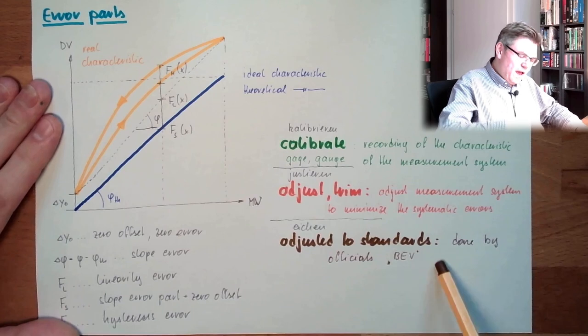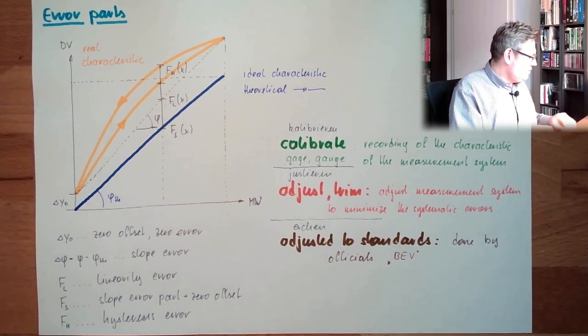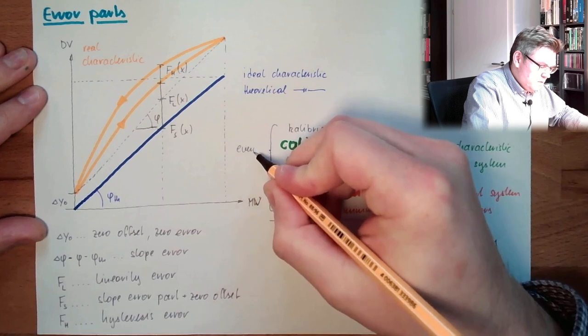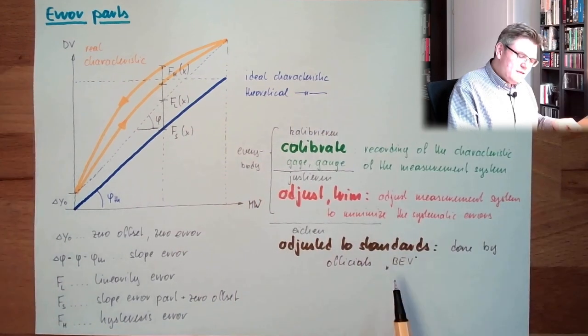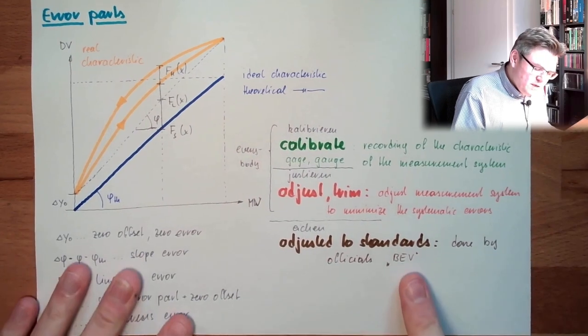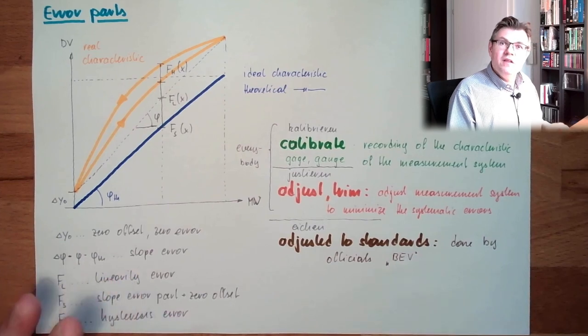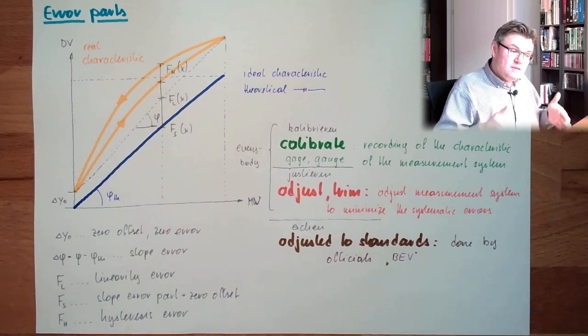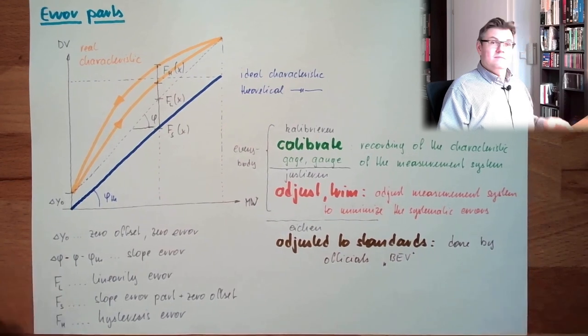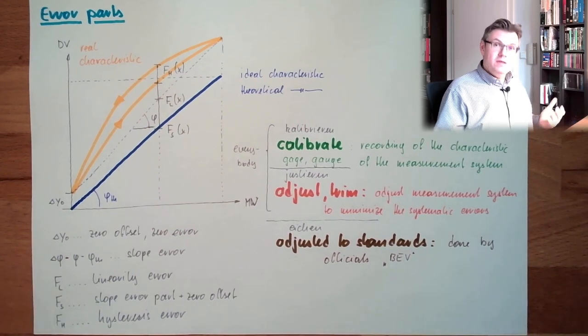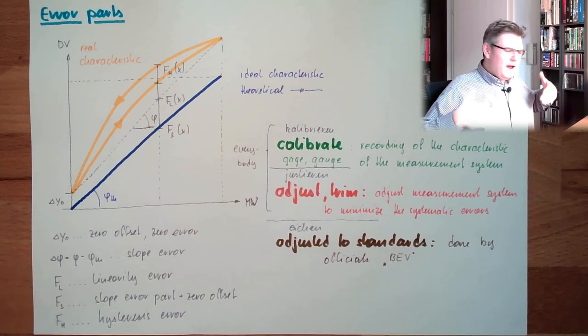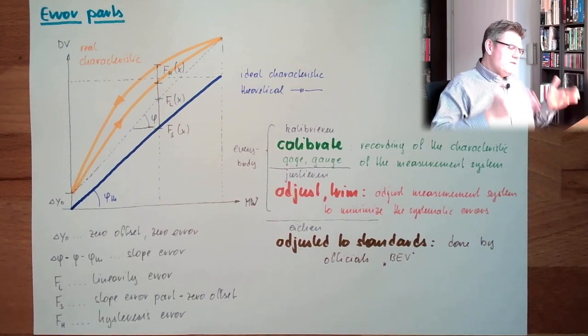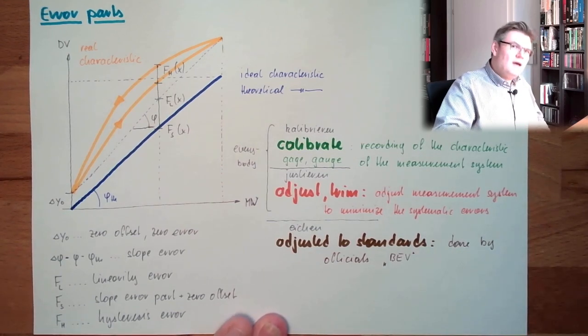Some things have to be adjusted to standards by officials. These things, calibration and adjustment, they can be done by everybody. This has to be done by officials because here usually it's about money. So if you go to the gas station, fill up your tank, there is written how many liters you put in. It has to be checked that nobody is just showing more liters. Or if you go to the butcher and you buy that many kilos of steak, those things have to be adjusted to standards by some officials.